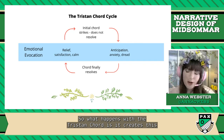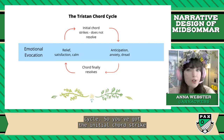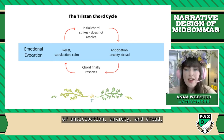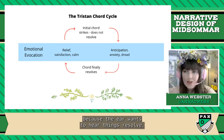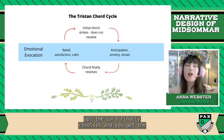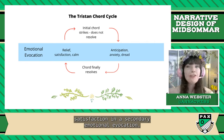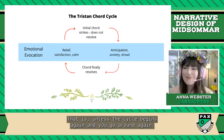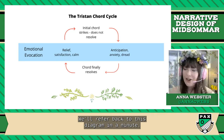What happens with the Tristan Chord is it creates this cycle. You've got the initial chord strike that does not resolve, which creates an emotional evocation of anticipation, anxiety, and dread — because the ear wants to hear things resolve. Then eventually, after all that buildup, the chord finally resolves and you get the exhale of relief and satisfaction in a secondary emotional evocation — unless the cycle begins again.